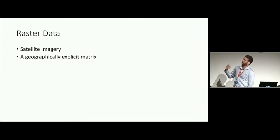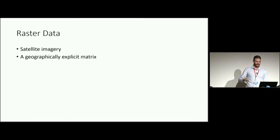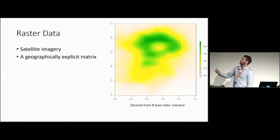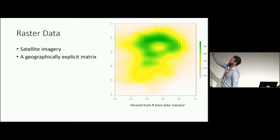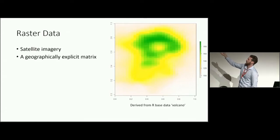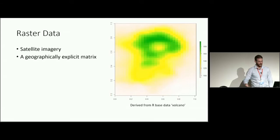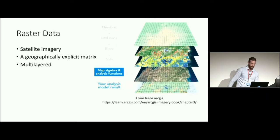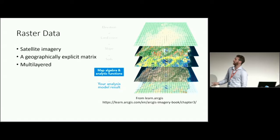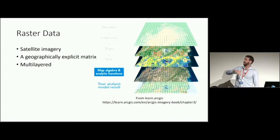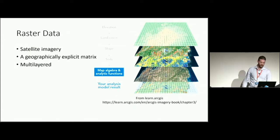Raster data is often taken from satellite imagery or derived from it. For example, Landsat flies around taking pictures and you can scrape that data — it's a geographically explicit matrix. Here's some data from our volcano dataset, made a bit coarser, but you can see it's just a matrix with numbers within each cell. What makes a raster different from just an image is that each point is geographically explicit — related to a real point on Earth. Rasters can also be multilayered, like Landsat data with its many different spectral bands.